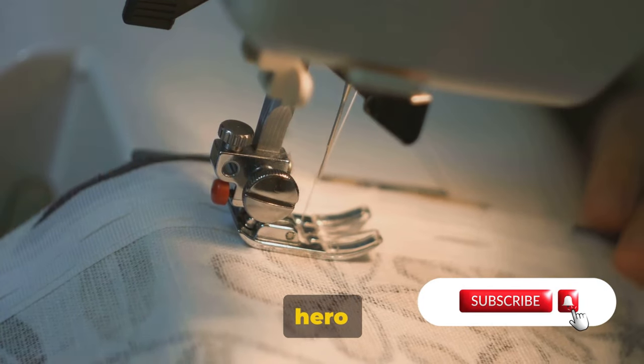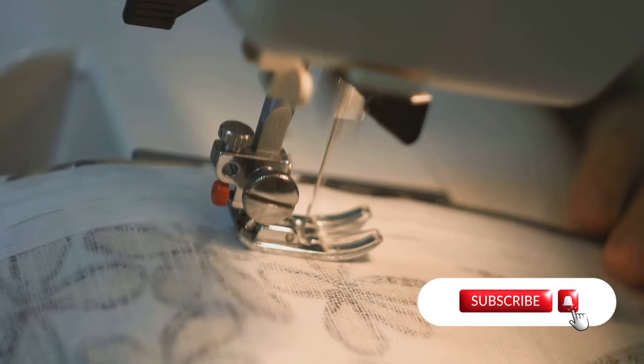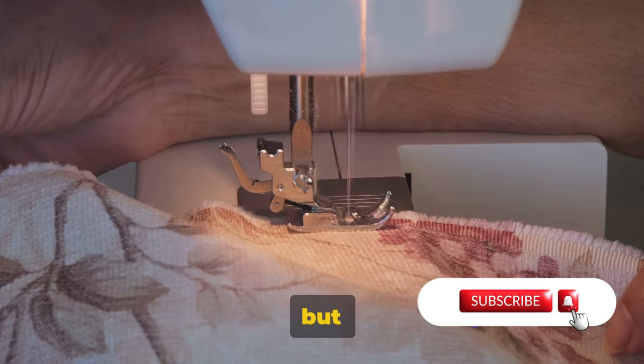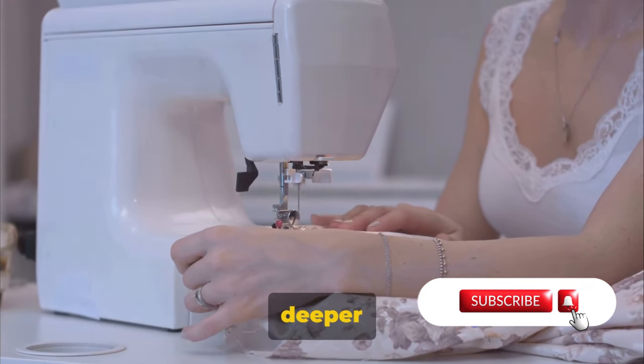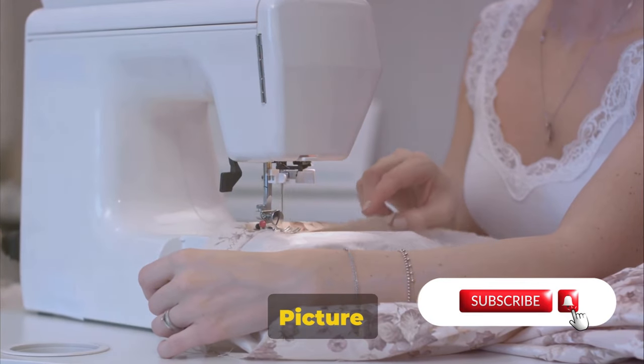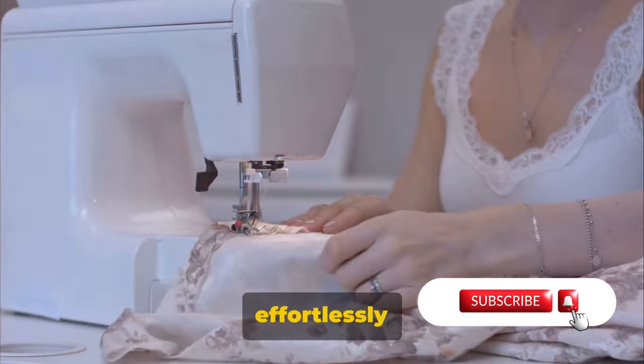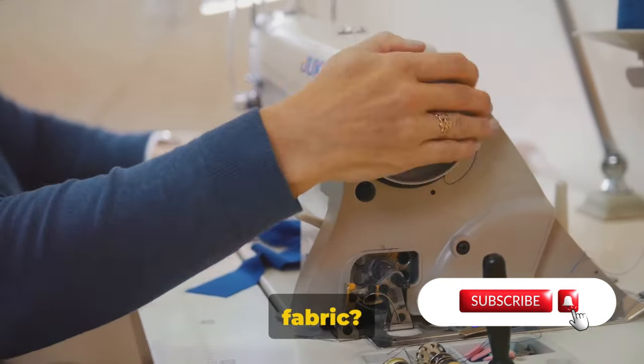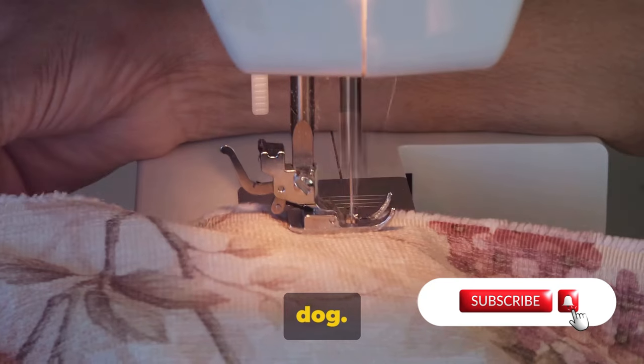The unsung hero of a sewing machine, the feed dog, guides the fabric with precision. This little yet integral part of your sewing machine might not get the limelight it deserves, but its role is absolutely pivotal. Let's delve a little deeper into the world of the feed dog. Picture yourself sewing a beautiful pattern, your fabric gliding effortlessly under the needle. Now who do you think is responsible for that smooth movement of the fabric? Yes, you guessed it right, it's our unsung hero, the feed dog.